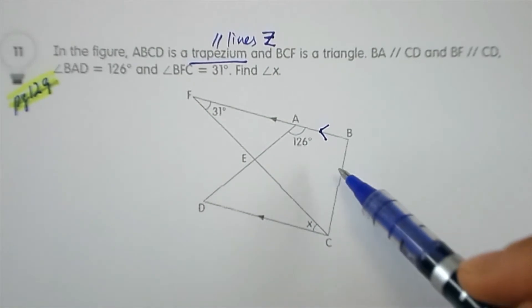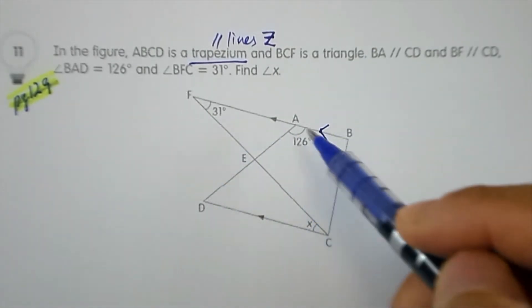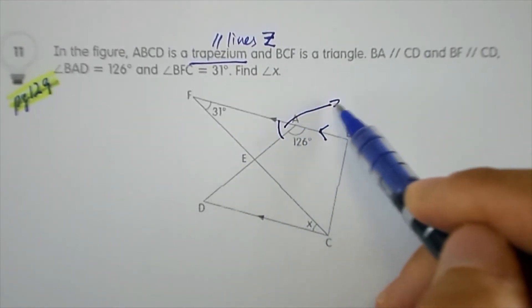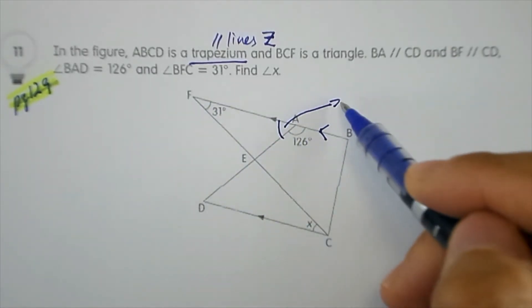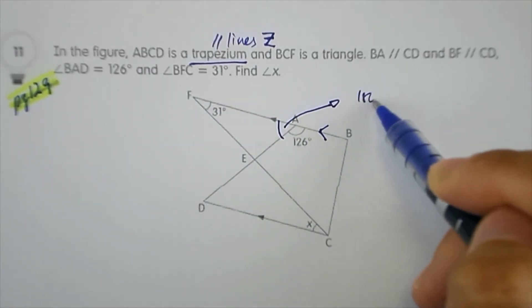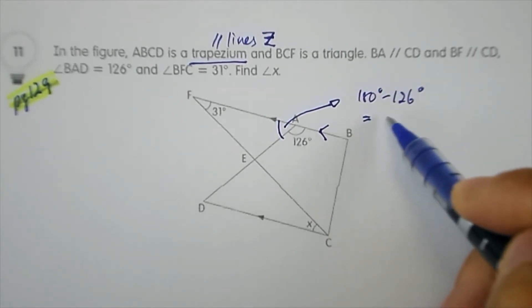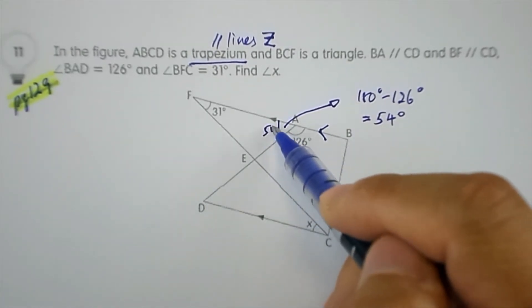First, let's look at the known angles here. The first angle we can find is over here. This angle on a straight line is equal to 180 degrees minus 126 degrees, which gives us 54 degrees. So this angle is 54.